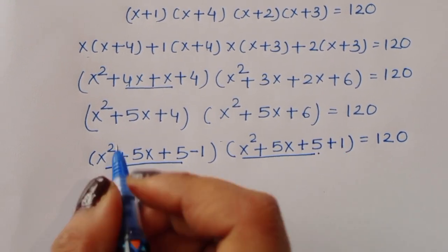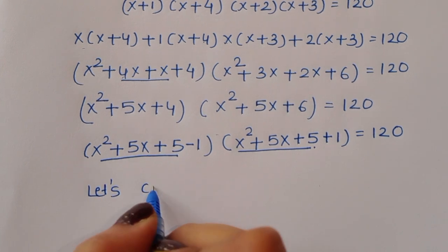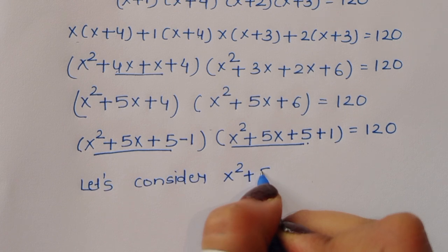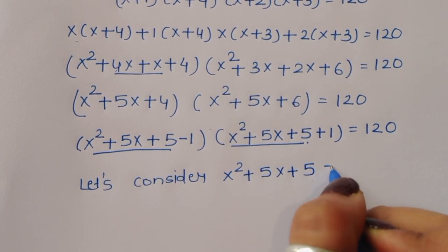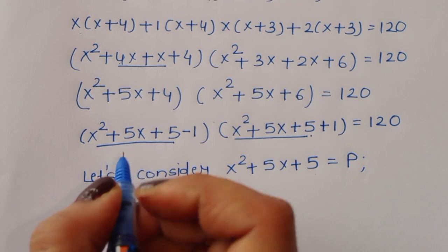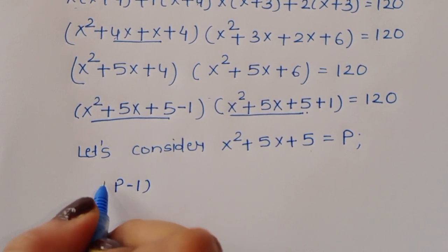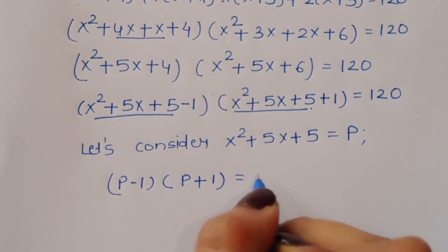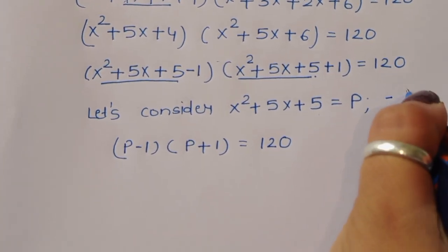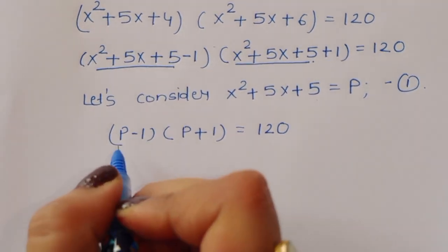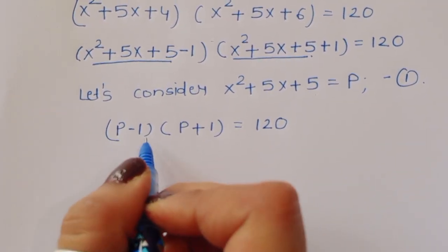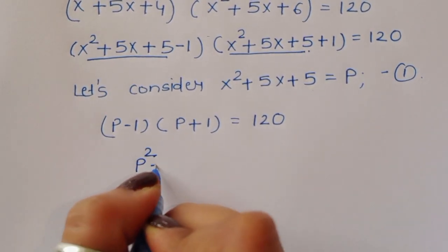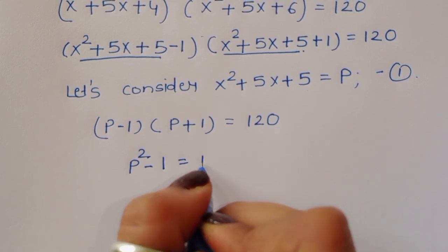We consider a substitution: let p = x²+5x+5. Then the equation becomes (p−1)(p+1) = 120. Using the identity (a−b)(a+b) = a²−b², we get p²−1 = 120.